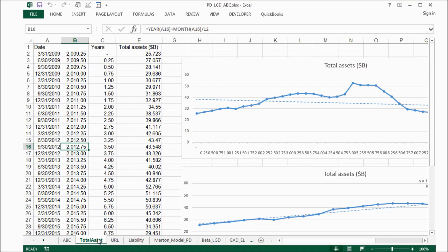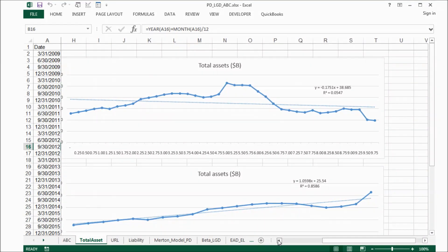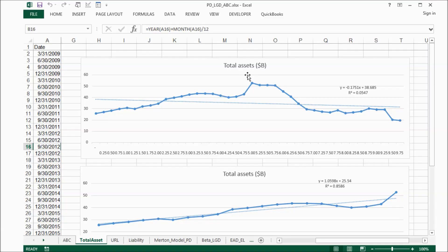I downloaded ABC company's financial statements for the last 10 years. And I put total assets of ABC company in this spreadsheet. After we draw the graph, you can see for the last 10 years, the total assets of this company went up and came down. Now, if we try to fit a straight line, the R square only 0.05. So really, it doesn't fit a straight line.